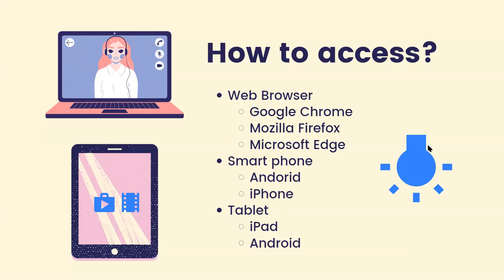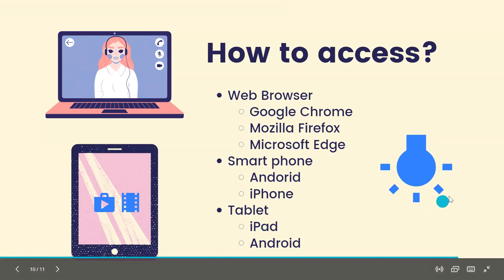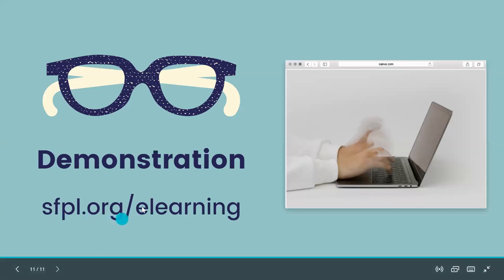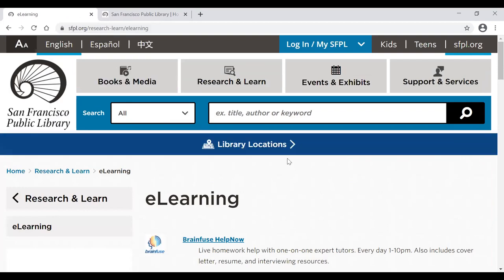That covers LinkedIn Learning. To access either platform, go to your web browser — Google Chrome, Firefox, Microsoft Edge — or use your smartphone or tablet. You'll go to sfpl.org/e-learning from your laptop or desktop computer. On that e-learning page, scroll down to see the many offerings the library provides.